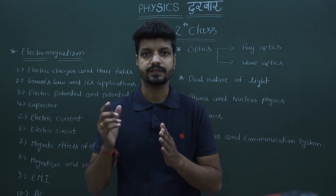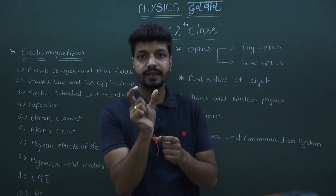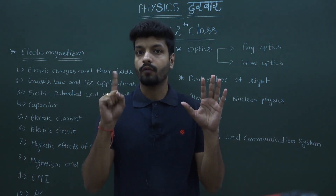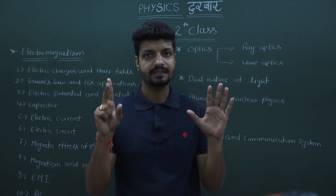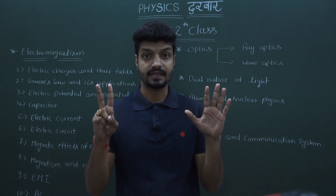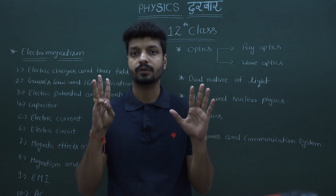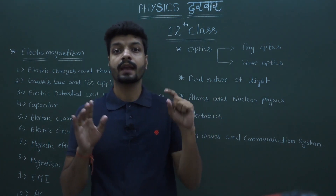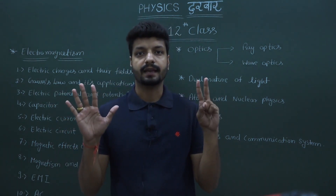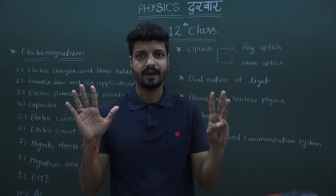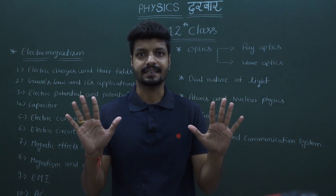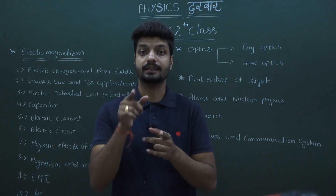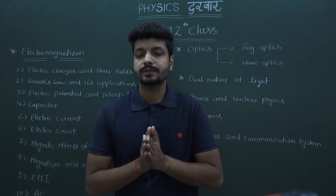First part of physics is electromagnetism. There is only one name — electromagnetism — but it contains 10 chapters: electric charges and their fields, Gauss's law and its applications, electric potential and potential difference, capacitor, electric current, electric circuits, magnetic effects of electric current, magnetism and matter, electromagnetic induction, and AC. These are the 10 chapters we have to study in the first part of 12th class physics.